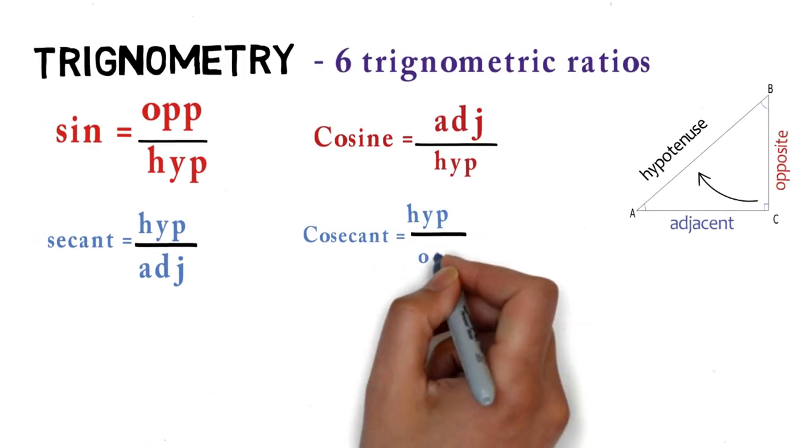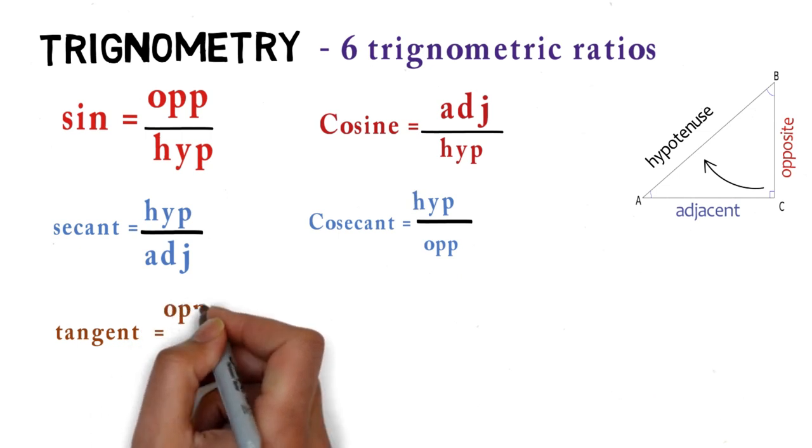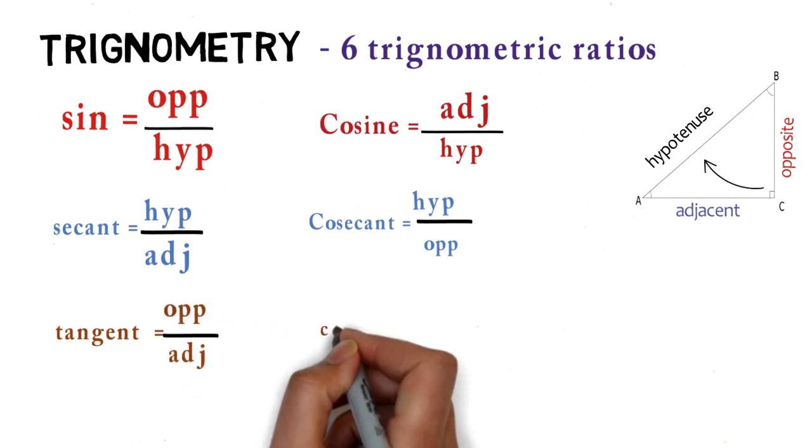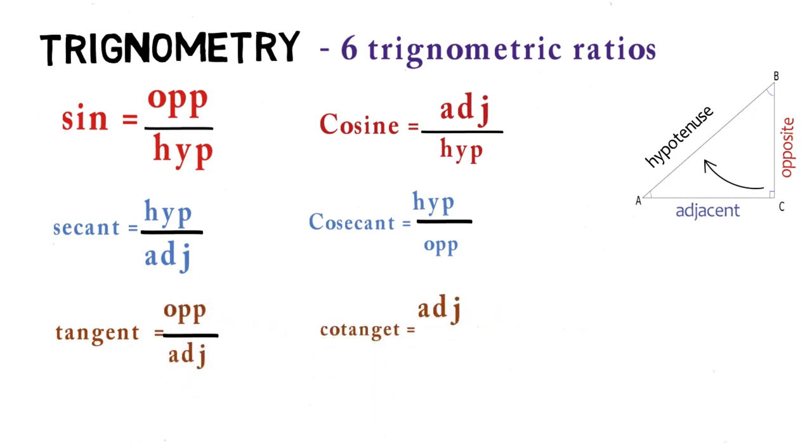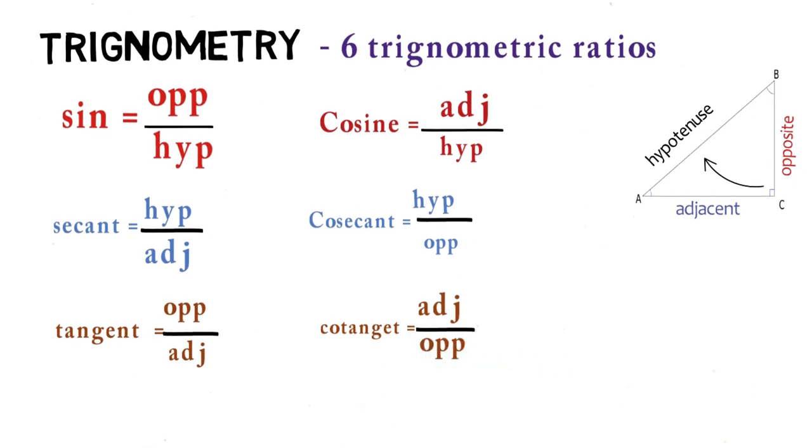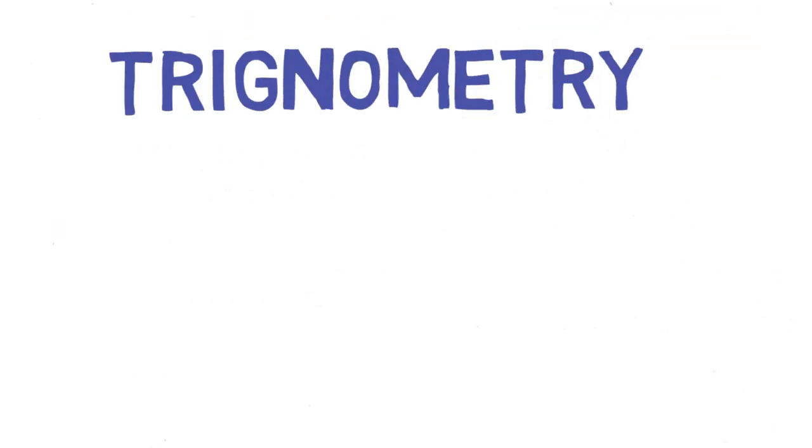Tangent is opposite by adjacent and cotangent is adjacent by opposite. Trigonometry may seem challenging but in reality it is extremely interesting.